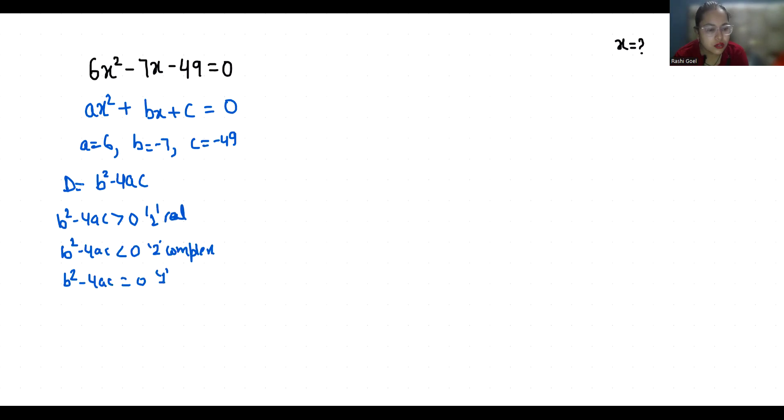So let's find out. The discriminant is b² minus 4ac: minus 7 squared minus 4 times 6 times minus 49. So 49 minus minus is plus, 4 times 6 is 24, times 49 is 1176. So this gave us 1225, which is positive, greater than zero, that means two real roots.